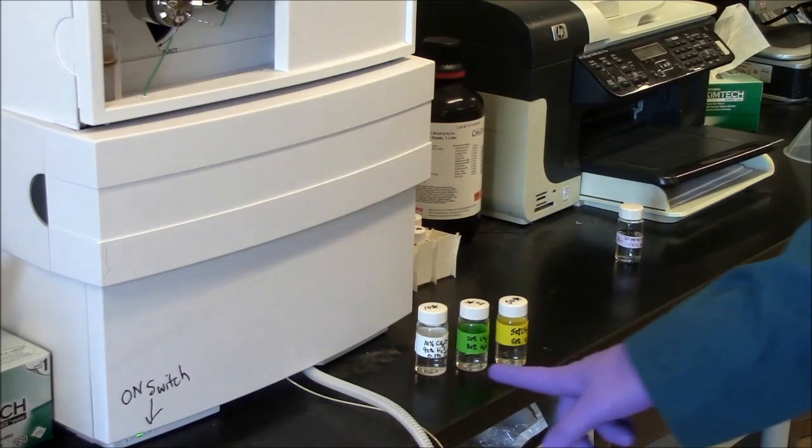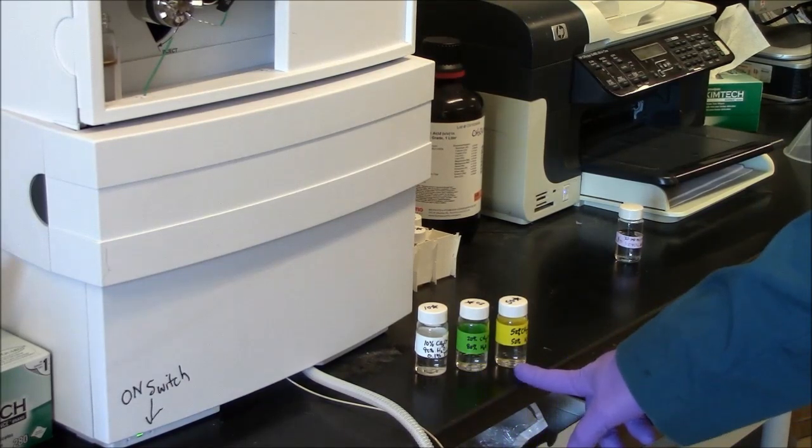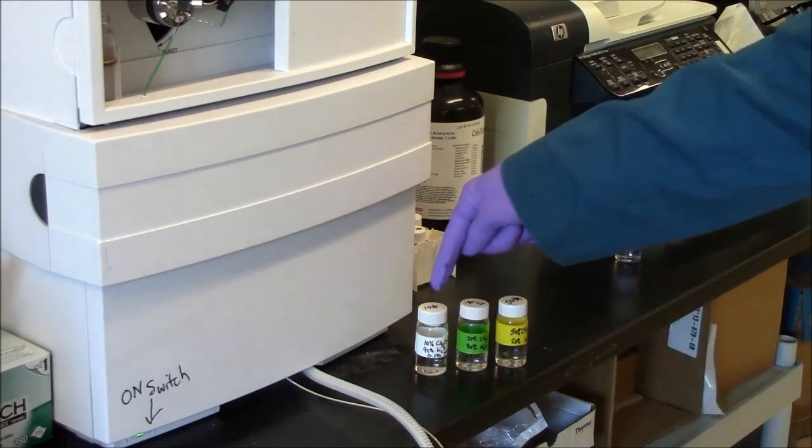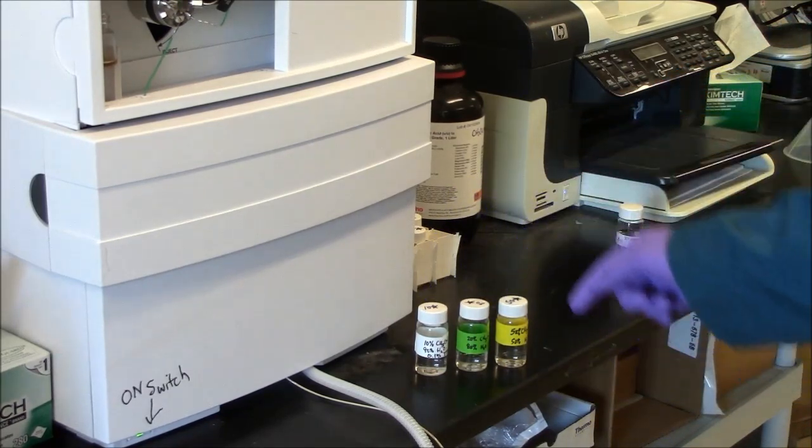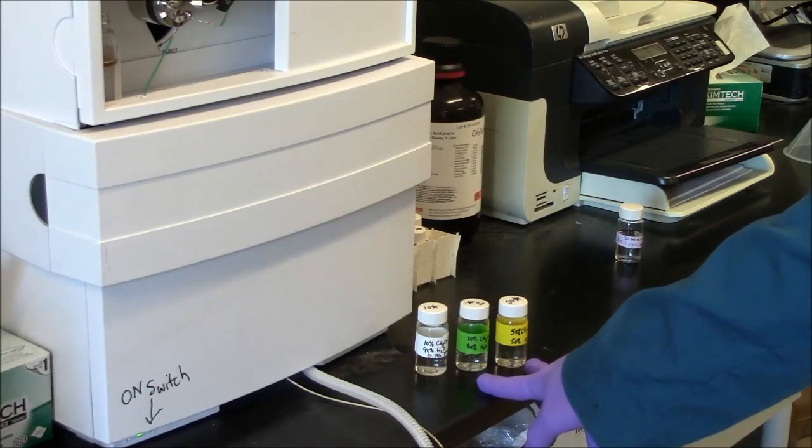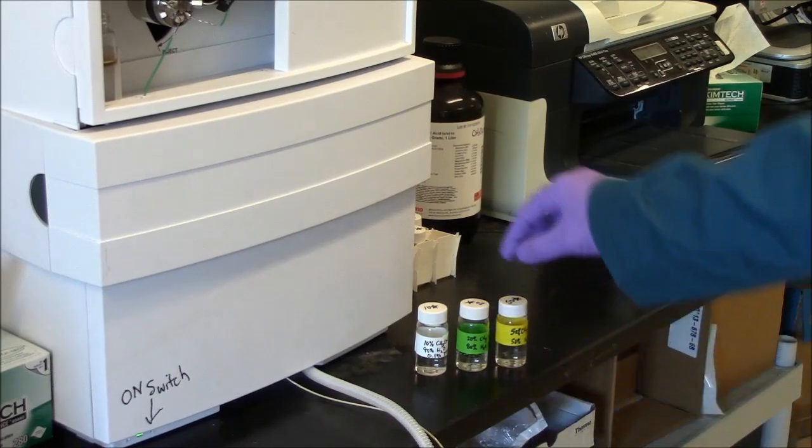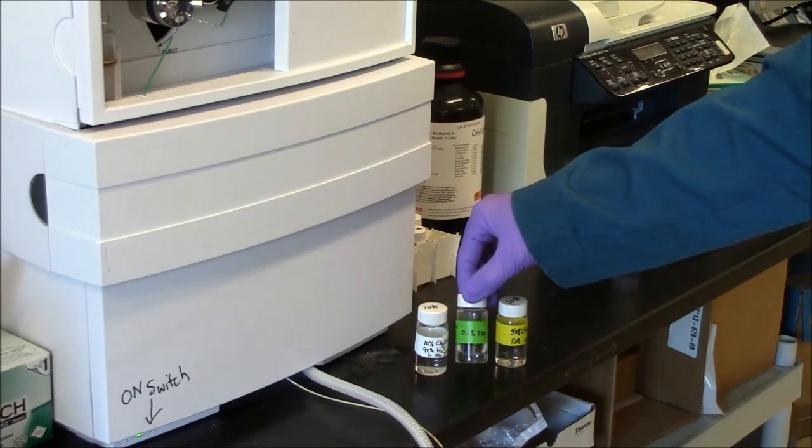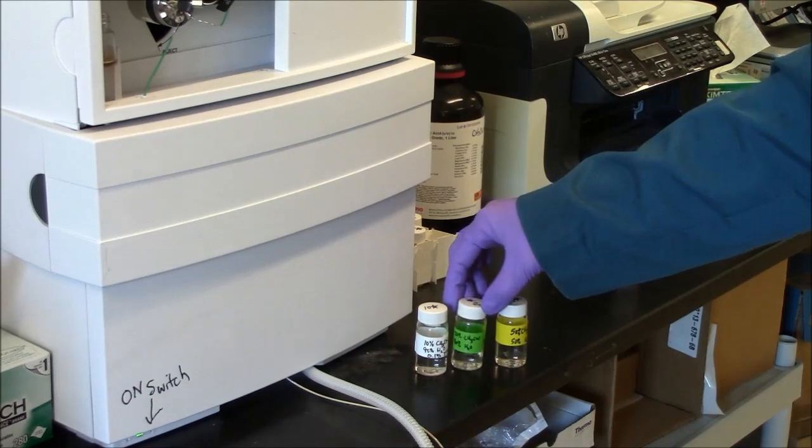For the HPLC, you use different solvents to dilute your sample. I've labeled these as 10-star, 20-star, 50-star. The number indicates the percent acetonitrile in these mixtures. The star indicates they also have trifluoroacetic acid. It's an acidulant. It's 0.1 percent.